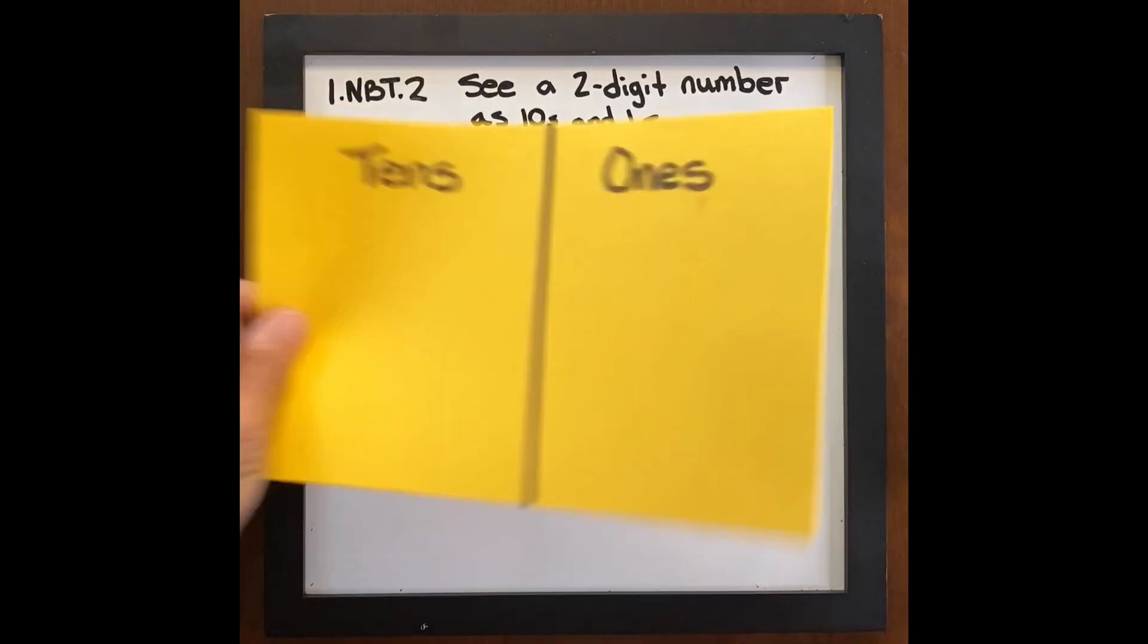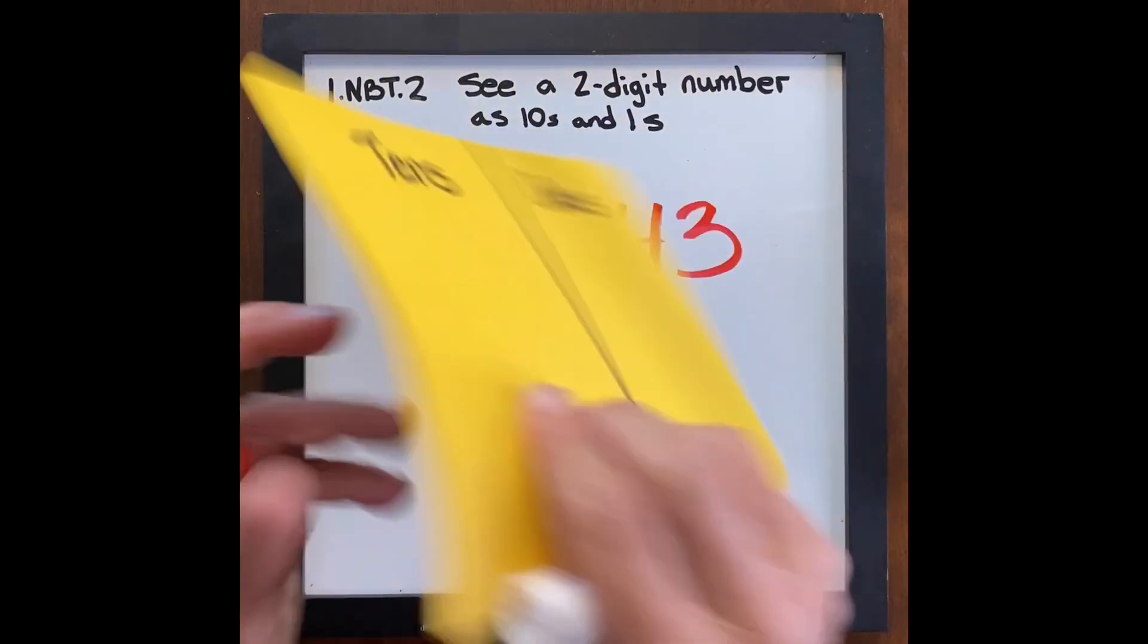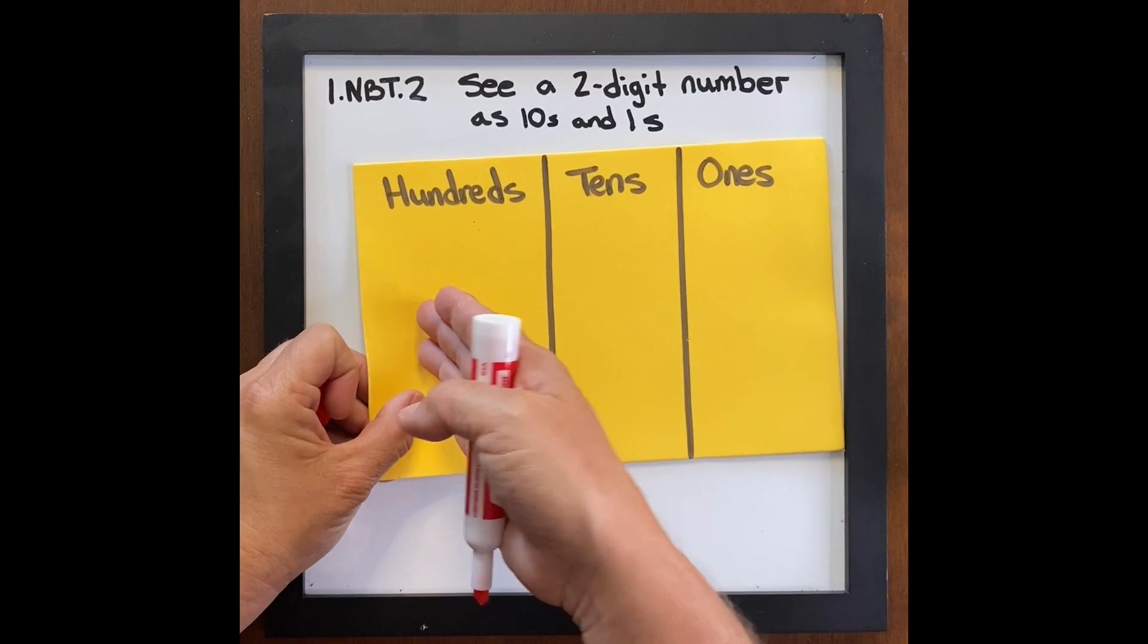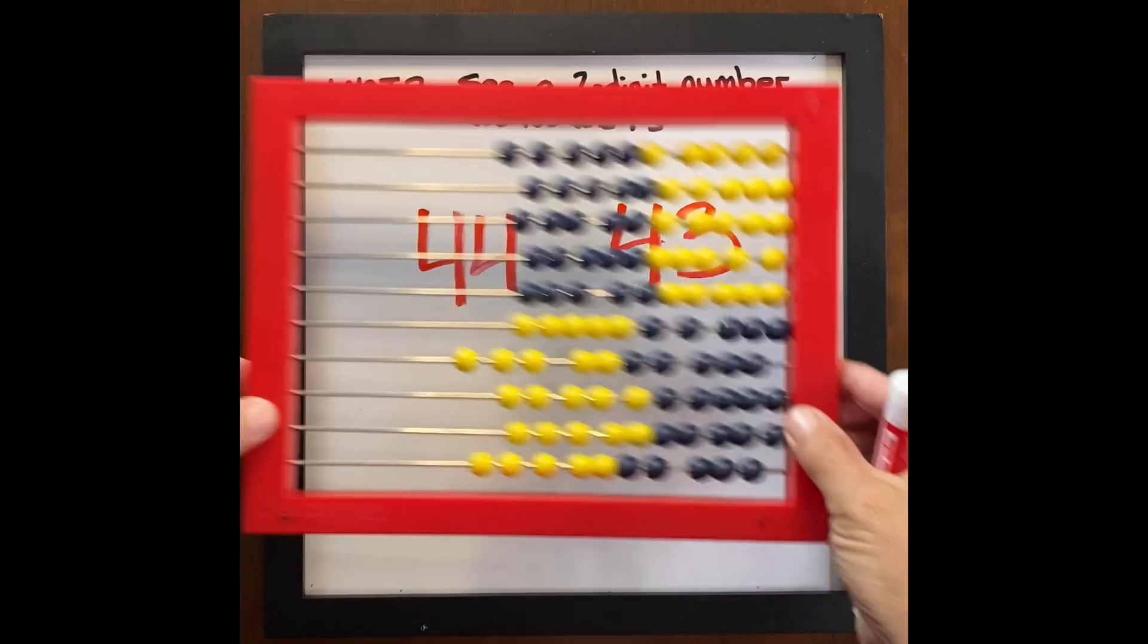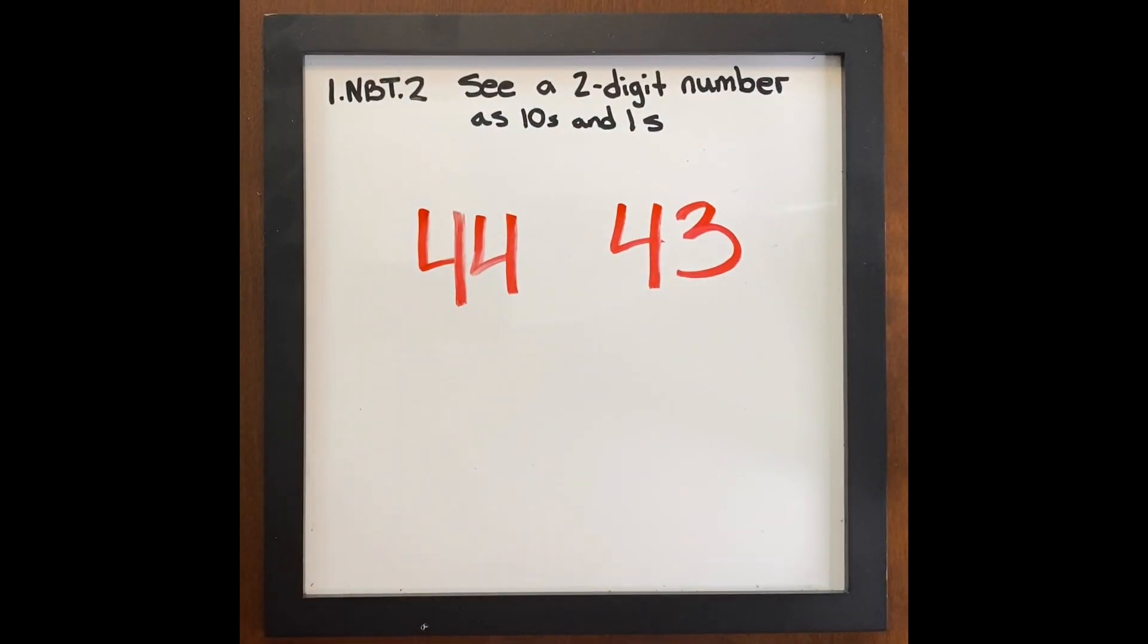Not just this is the ones group, this is the tens group, or this is the ones group, the tens group, the hundreds group. But what is really happening? That's why the abacus was extremely important for that visual.